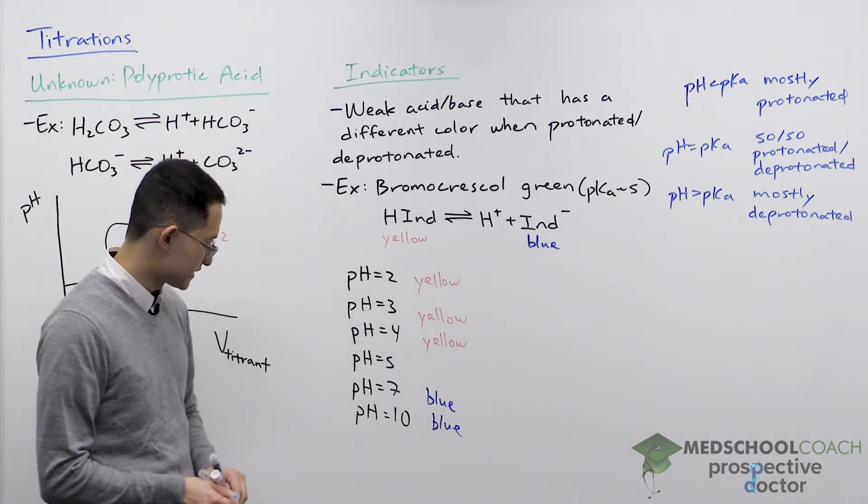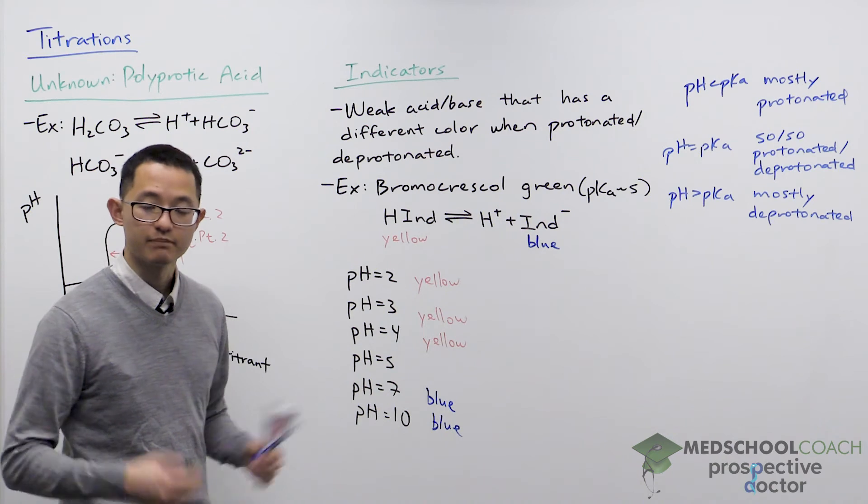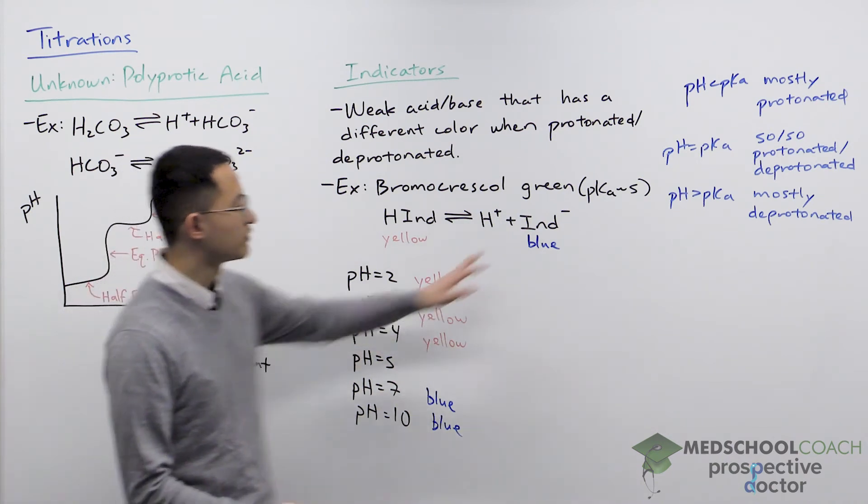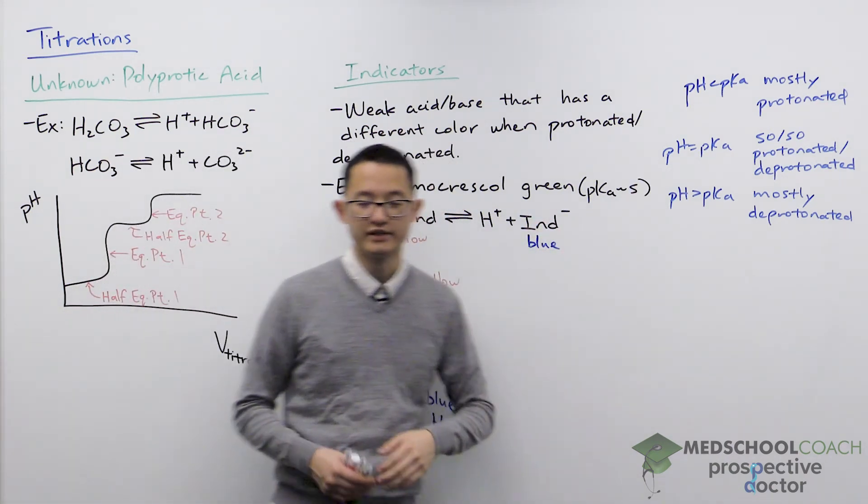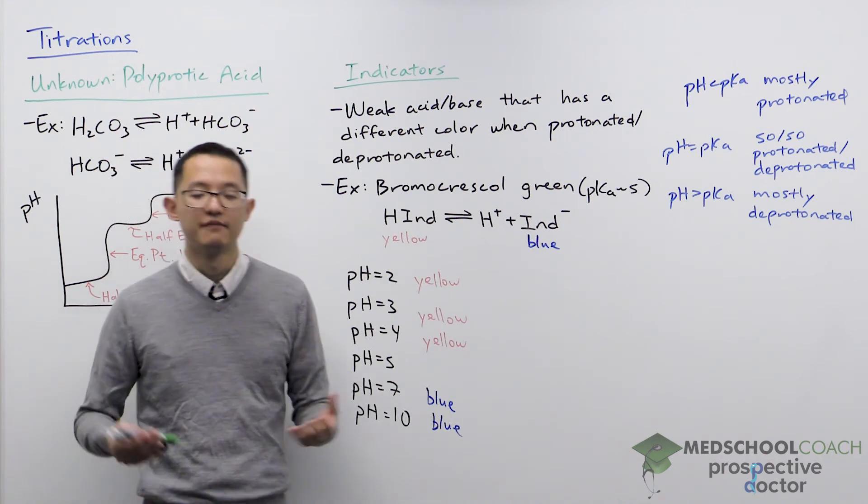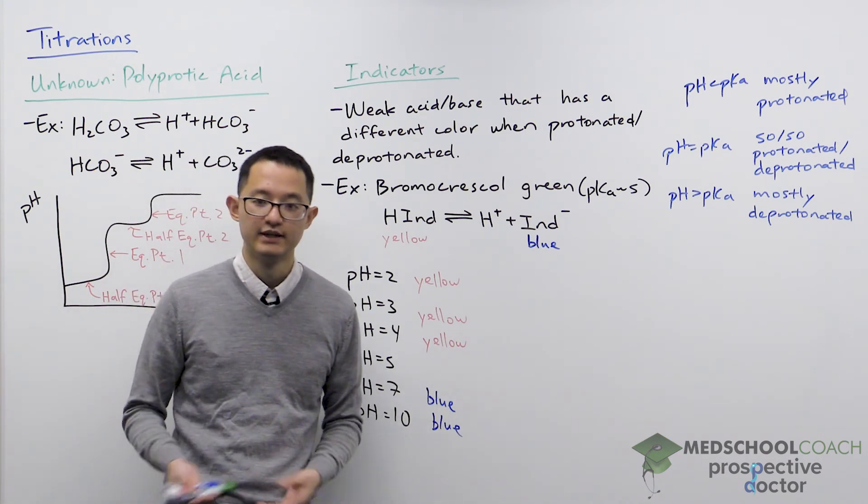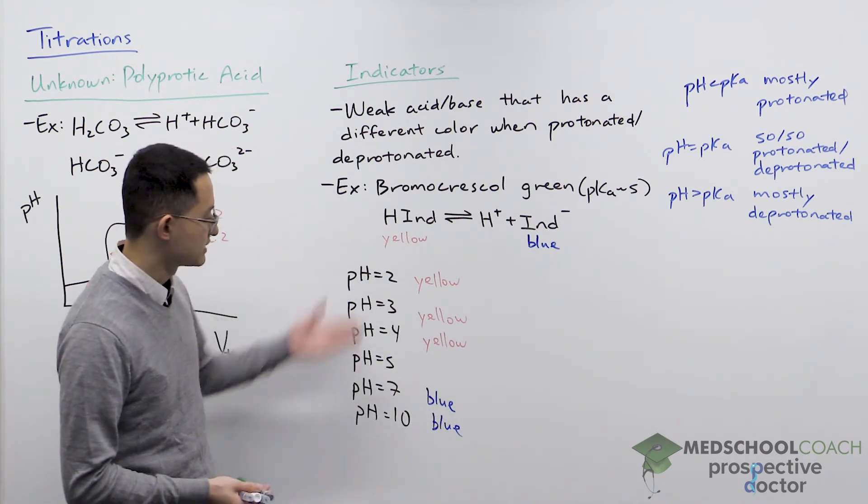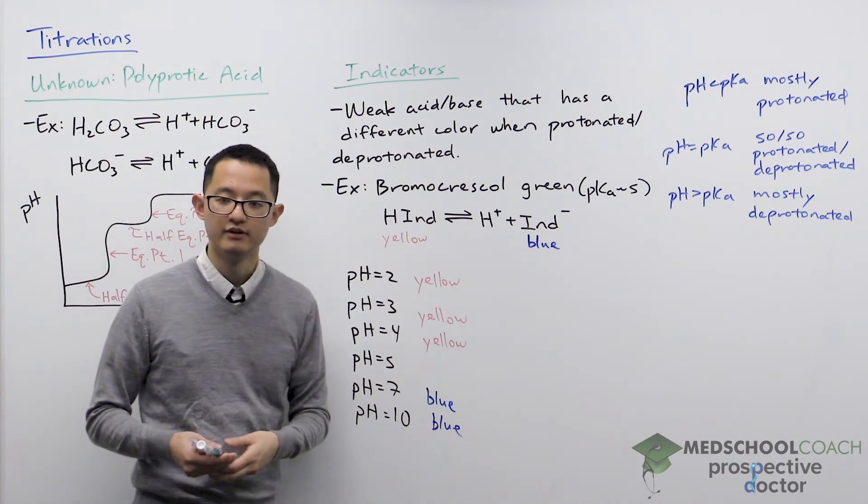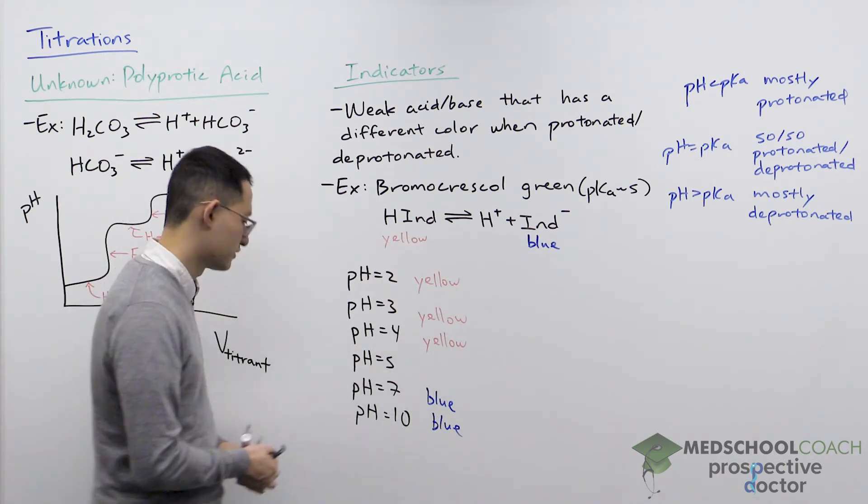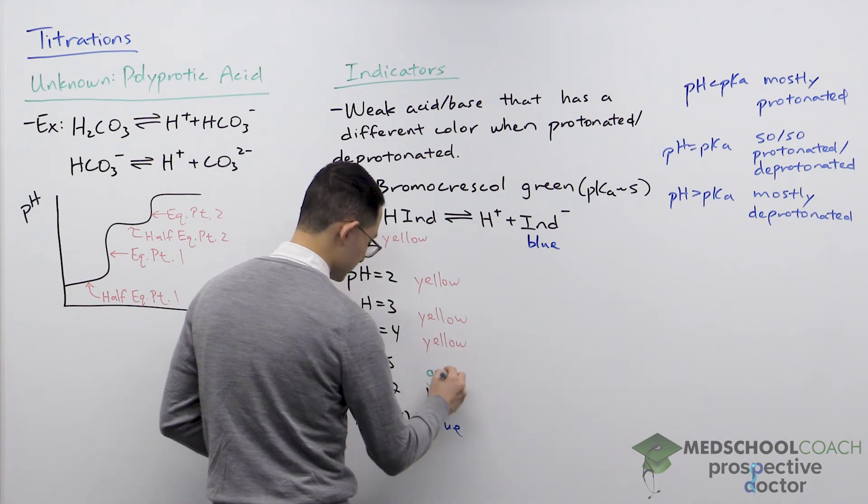So finally, we can consider a pH of 5. At a pH of 5, that's equal to the pKa, so our molecule is 50% protonated, 50% deprotonated. So that means it's half yellow, half blue, and the net result is you end up with a green solution.